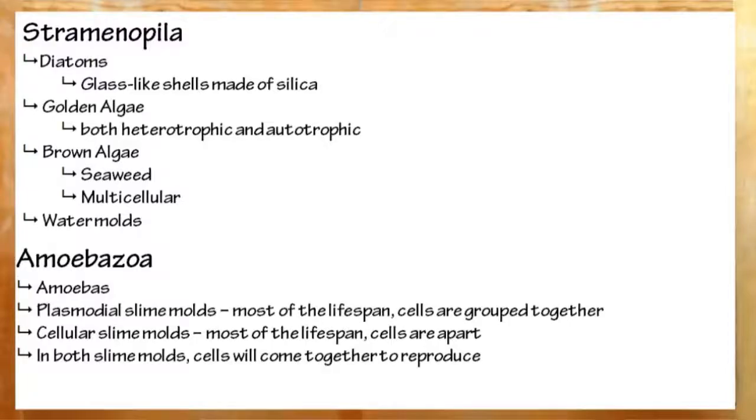Golden algae. These are both heterotrophic and perform photosynthesis, but they have a golden, yellowish-brown pigment. Brown algae, more commonly known as seaweed. These are multicellular and water molds, things like mildew. While they act a lot like fungi, they are, in fact, unicellular.